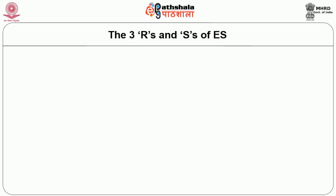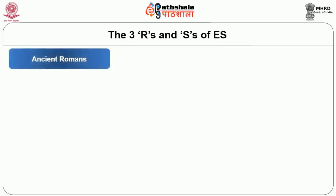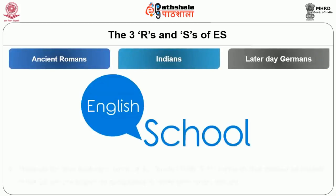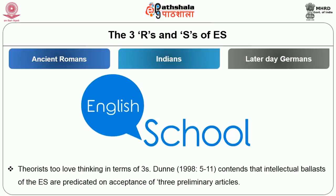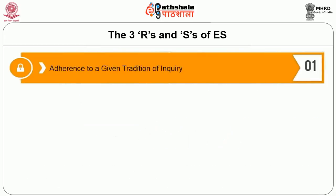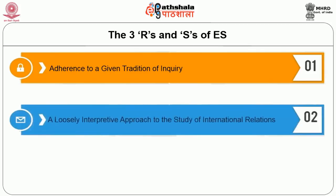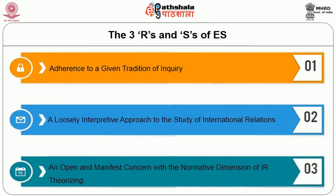For reasons we do not know, like ancient Romans and Indians and later-day Germans, English school theorists too love thinking in terms of threes. Dunn contends that the intellectual ballasts of the English school are predicated on acceptance of three preliminary articles: adherence to a given tradition of inquiry, a loosely interpretive approach to the study of international relations, and an open and manifest concern with the normative dimension of IR theorizing.